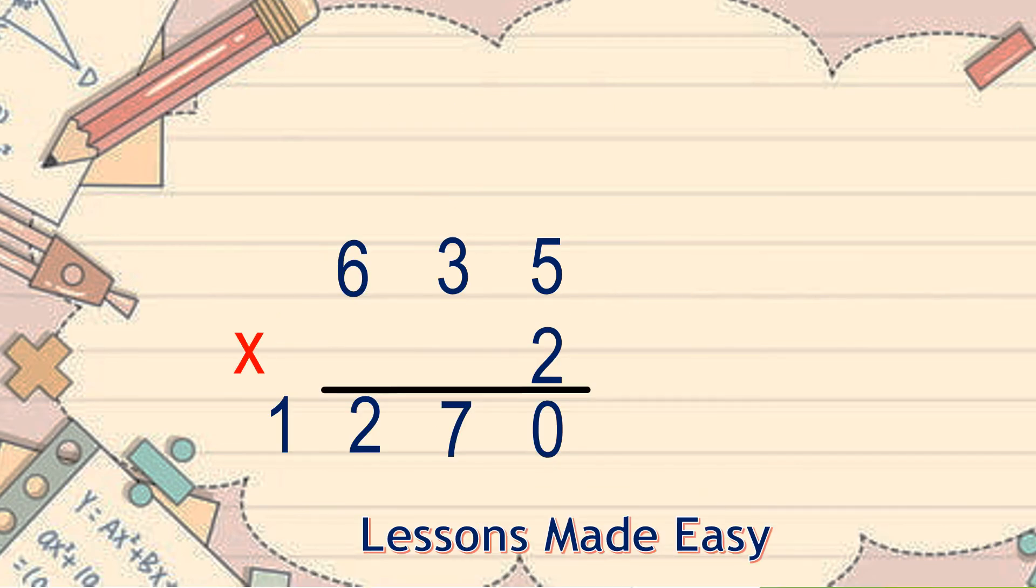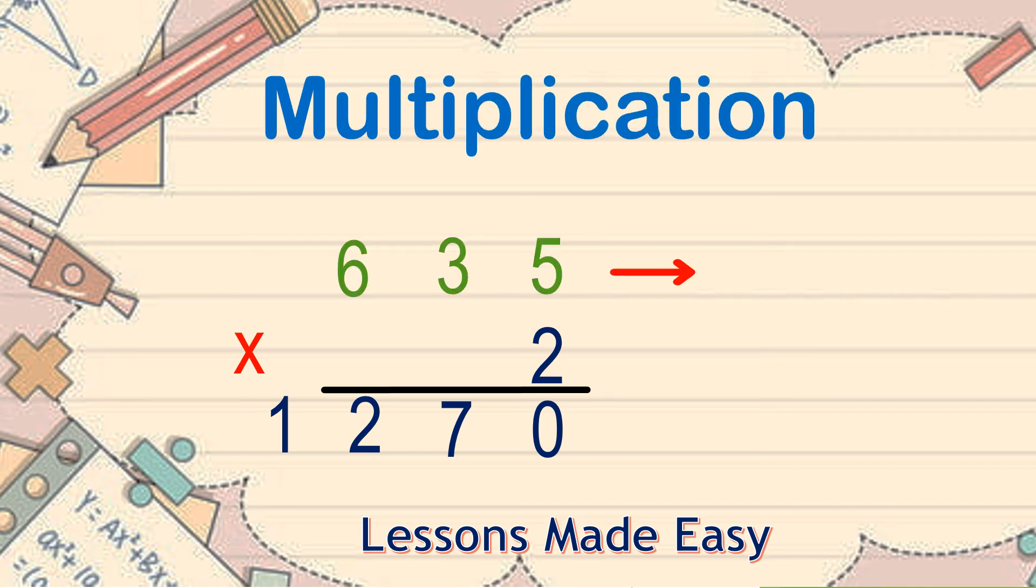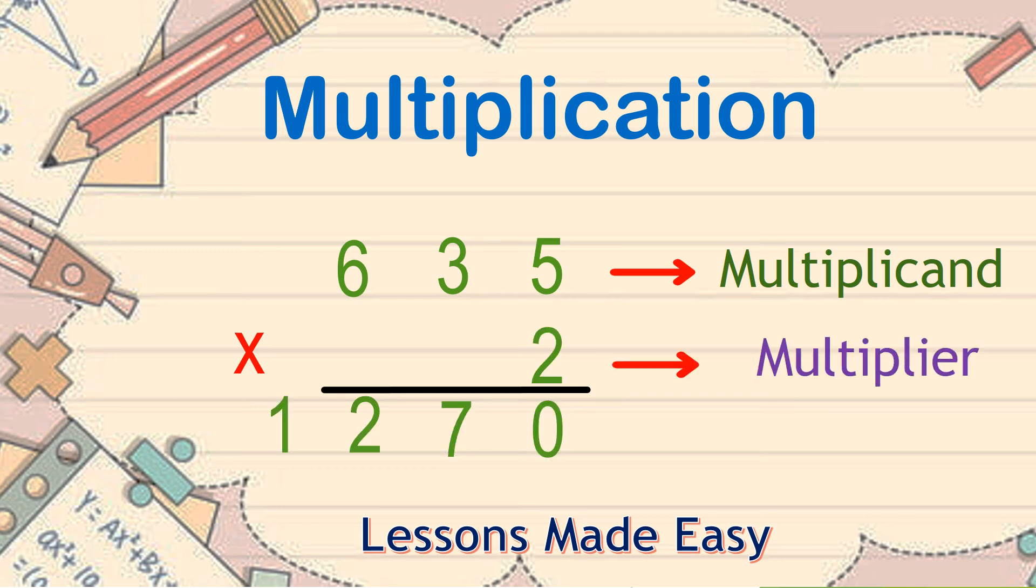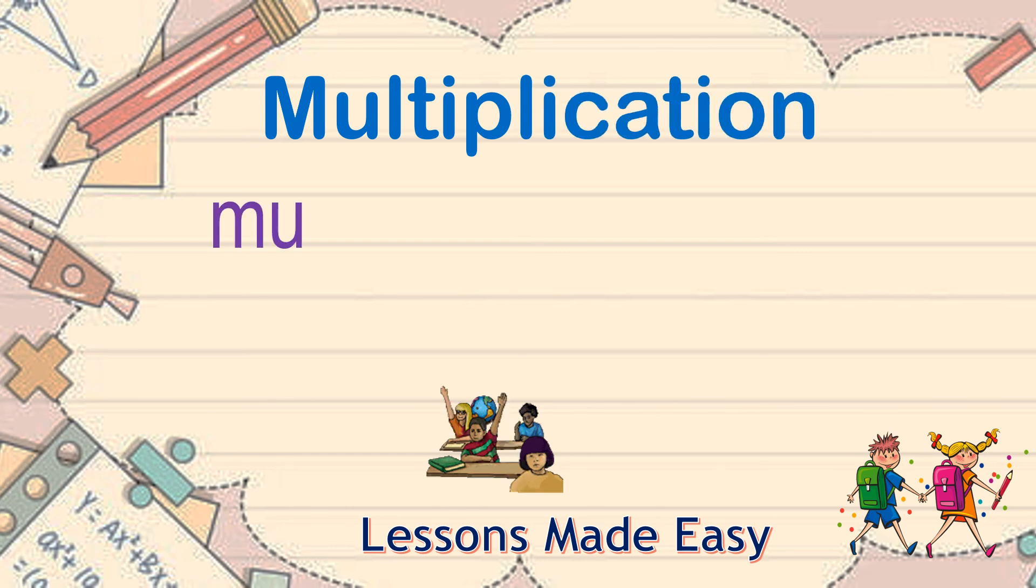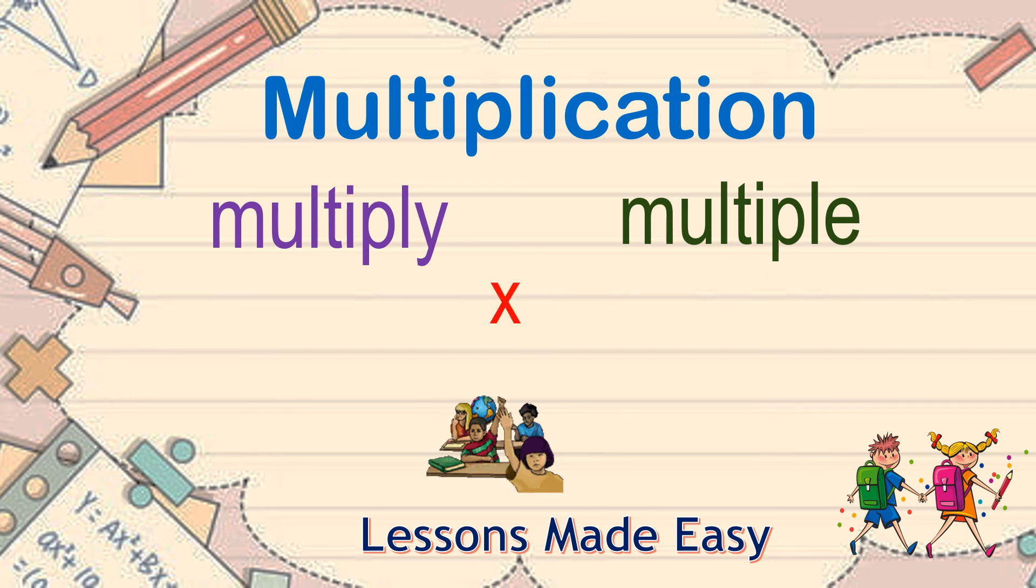Before we finally end our lesson, let's have a quick review. In a multiplication problem, the first set of numbers is called the multiplicand, and the other is called the multiplier. The answer in a multiplication problem is called the product. Here are some words related to multiplication: words like multiply, multiple, the simple x for times, and the answer called the product.